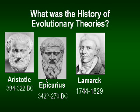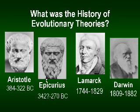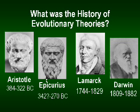Darwin is credited with popularizing evolution. He came up with a book in 1859 called 'The Origin of Species.' The subtitle of his book is 'The Preservation of Favored Races.' Early evolutionists were racist — they believed that the white man was the pinnacle of the evolutionary pattern. They don't talk about that very much because of social pressures, but you can read their early evolutionary comments and they are very racist.